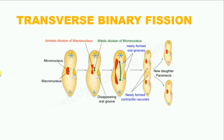Just to recap things a little bit, the specific type of binary fission that takes place within a paramecium is the transverse binary fission, in which the organism's body splits into two halves across its transverse axis.